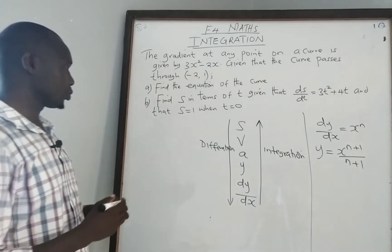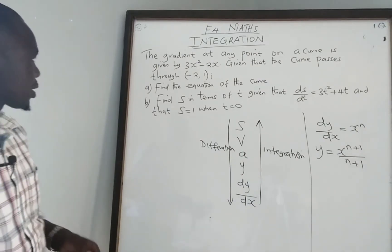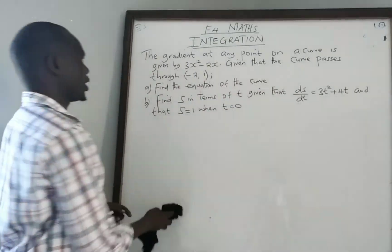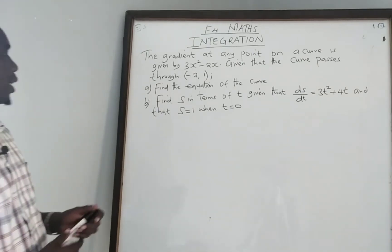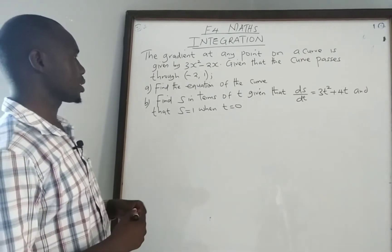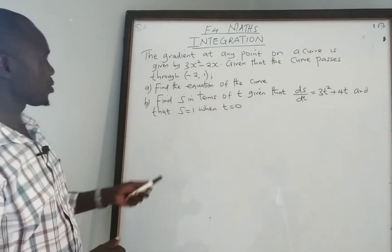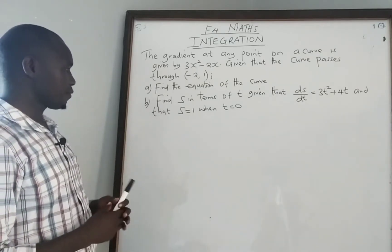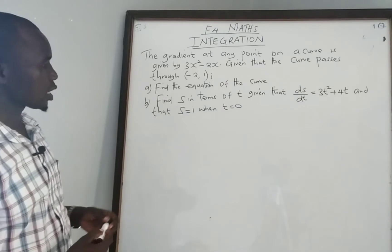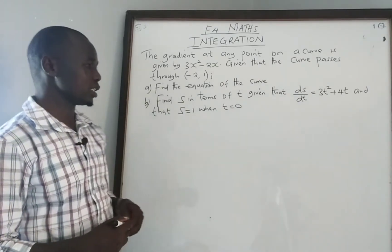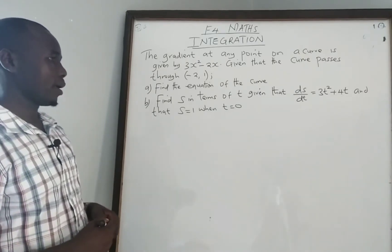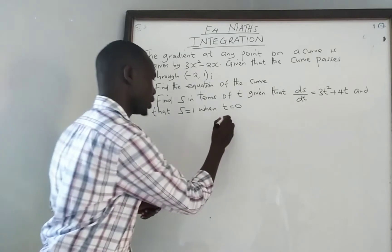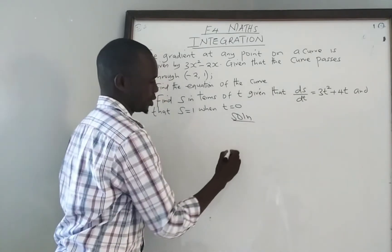Looking at the question on the board: part a reads — the gradient at any point on a curve is given by 3x squared minus 2x; given that the curve passes through the point (−2, 1), find the equation of the curve. Part b — find s, which stands for displacement, in terms of t, given that ds over dt is 3t squared plus 4t, and that s equals 1 when t equals 0.